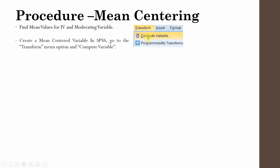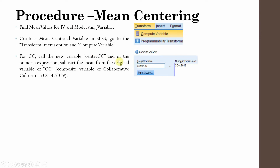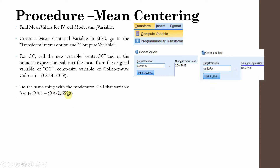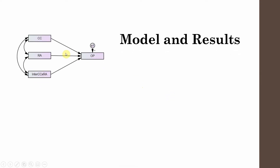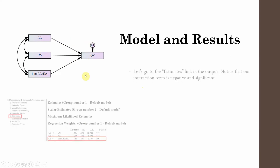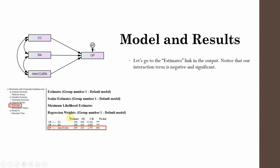Briefly going through the last session: first we find the mean values for the IV and the moderating variable. Then we mean-center our variables by subtracting the mean value from the composite variable — CC minus the mean for CC, and RA minus the mean for RA. Then we create the interaction term of the centered variables and build our model in AMOS. The interaction was negative and significant.